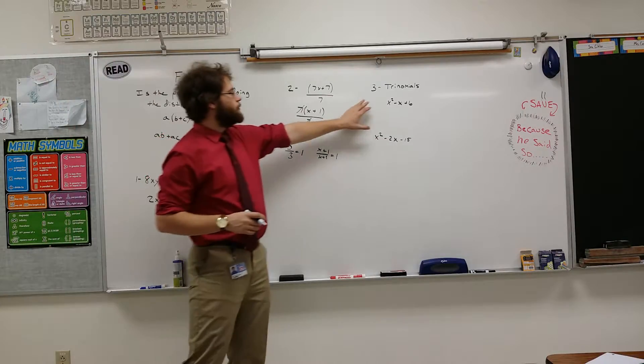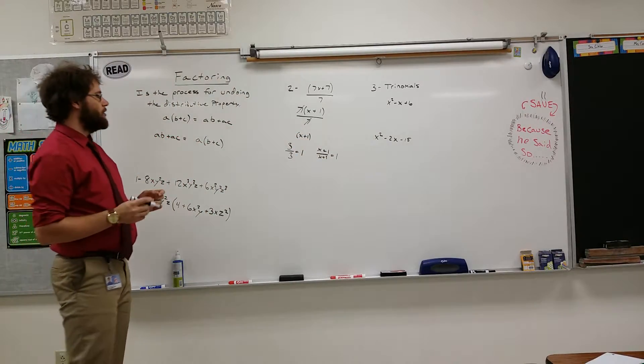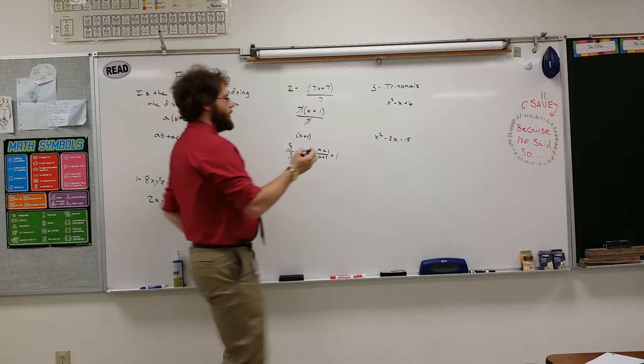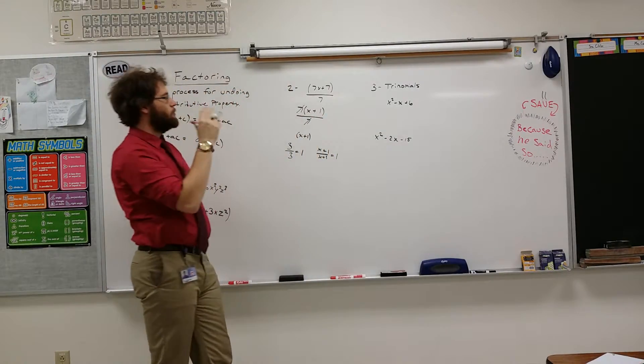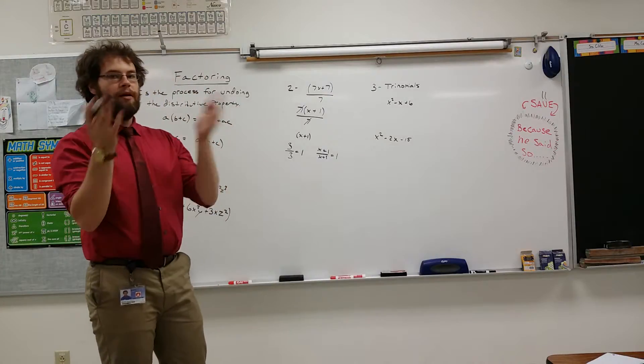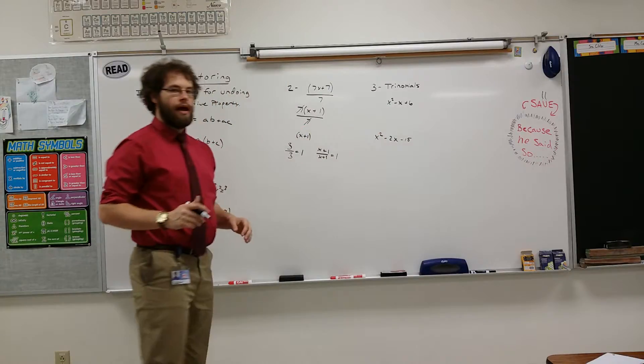The final example of factoring is what's called a trinomial. Trinomials are special because you can factor them in a different way. And we factor them by turning them into two of these factors here, an X plus something or an X minus something, that when you multiply them together, you equal the original trinomial.